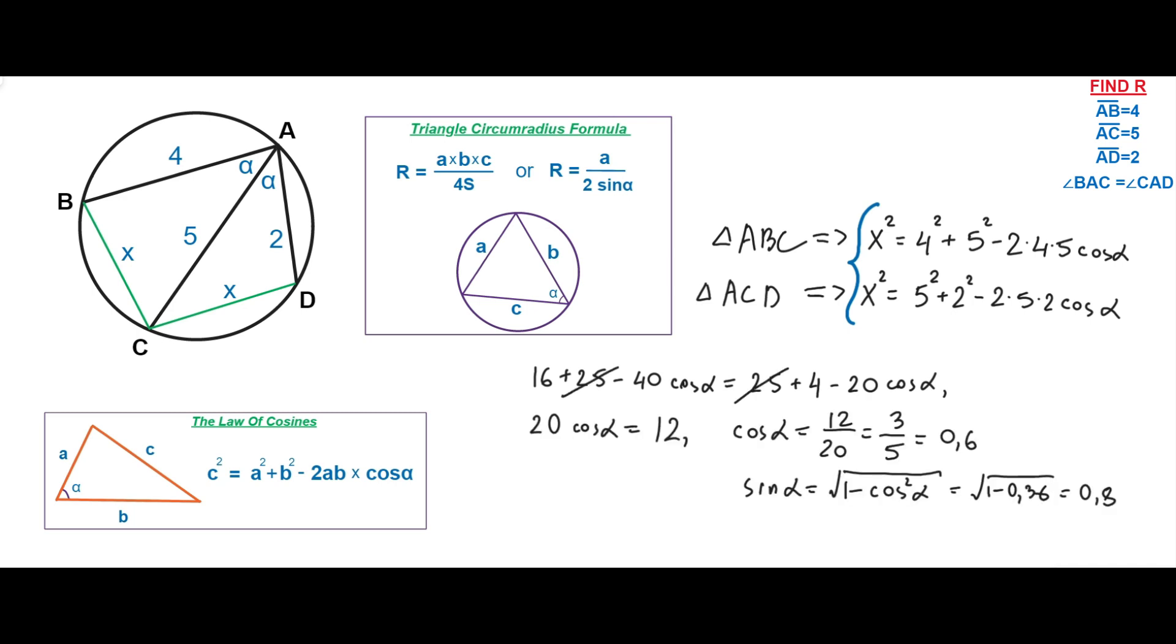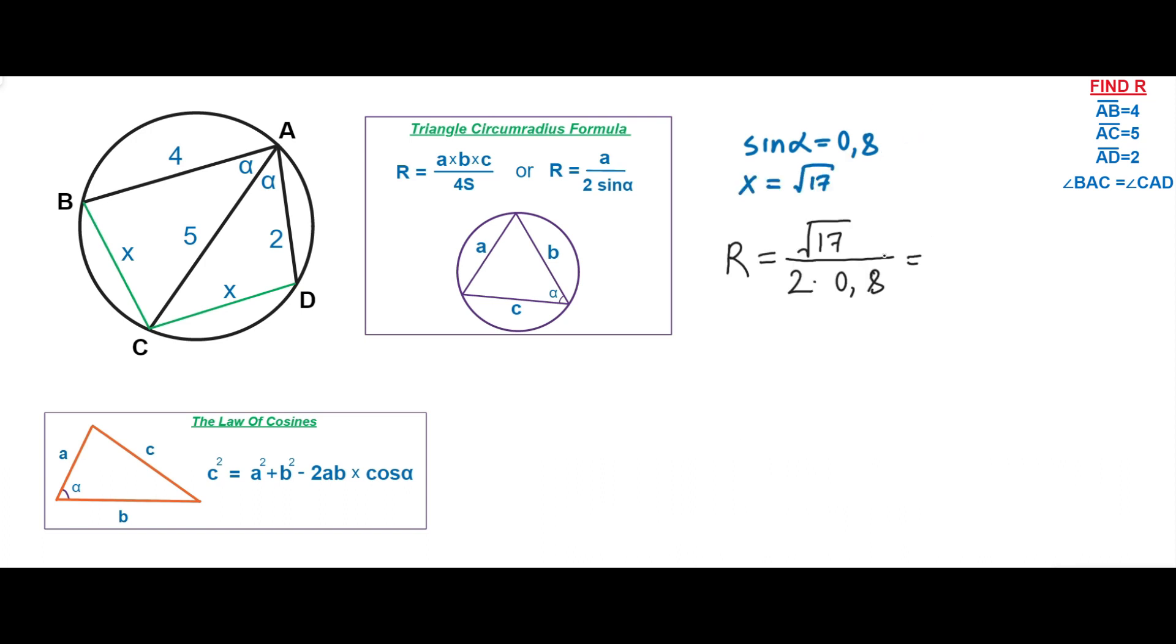Let's also calculate the X. After knowing the sine alpha and the X, we can put these values into this formula and finally get the answer. The circumradius is equal to 5 square root 17 divided by 8, which is approximately 2.6. Thanks for watching.